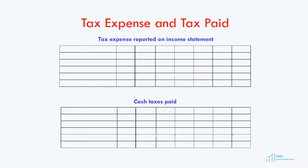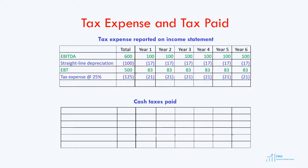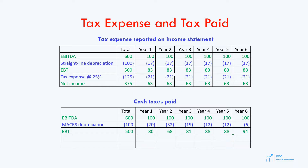Let's calculate the tax expense and tax paid using the accelerated depreciation and straight-line depreciation methods. Assume that our EBITDA is 100 per year. We have the straight-line depreciation expense; EBITDA less depreciation expense gives us earnings before tax, and our tax expense is earnings before tax times the tax rate of 25%. We then calculate cash taxes paid using the MACRS schedule with the same EBITDA of 100, MACRS depreciation expense, and tax rate of 25%.